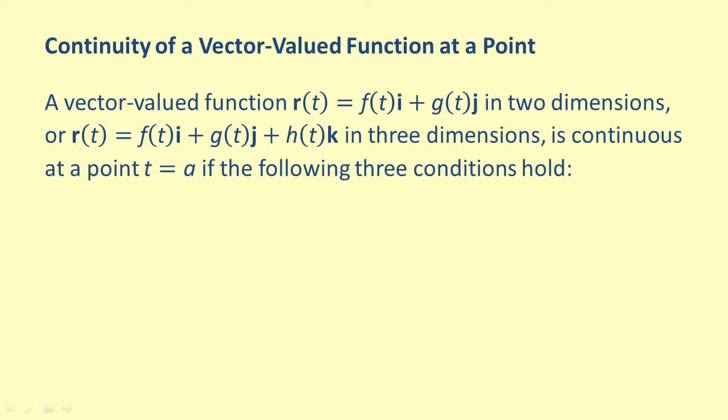there are three conditions that must all be true in order for a vector-valued function to be continuous at a point.